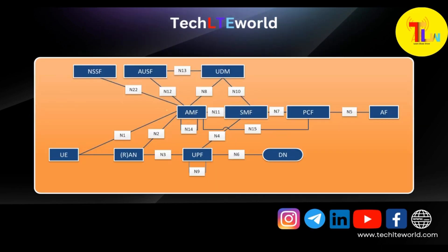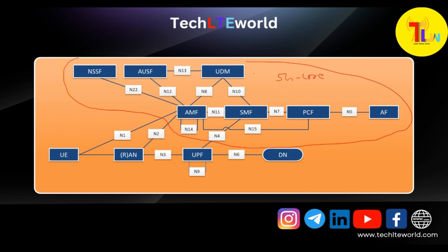In the next slide you can see that AMF has connectivity with different network functions. This is your 5G core network — this part is the control plane. You can see the different network functions available in this core network, like SMF, AMF, UDM, PCF, AF (Application Function), AUSF, and NSSF for network slicing. All these network functions are connected with each other as reference points.